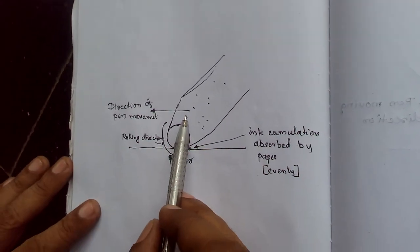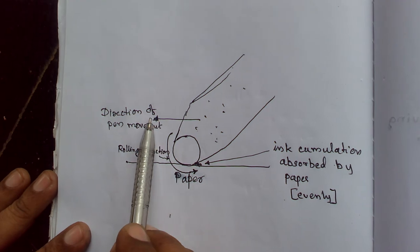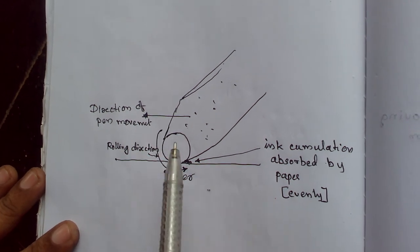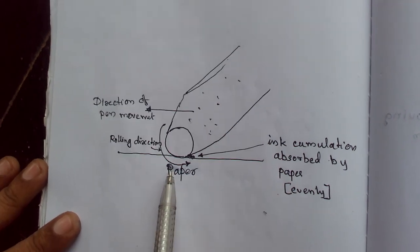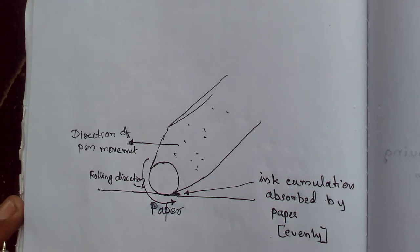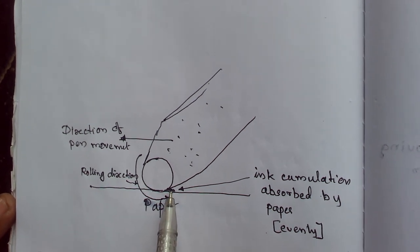Then, the second method. This is the direction of pen movement. So the ball is rotating in this direction. So there is a possibility of accumulation of ink here, not here.